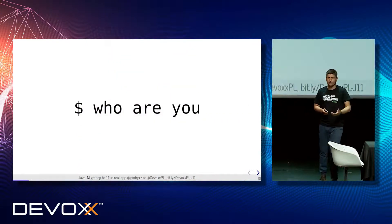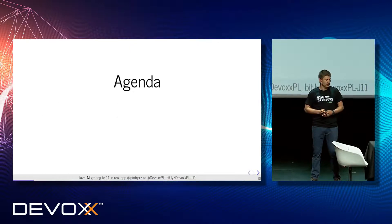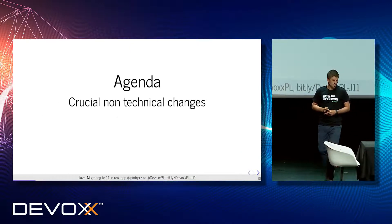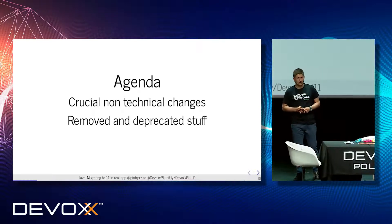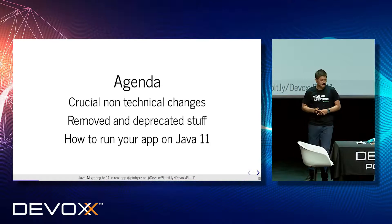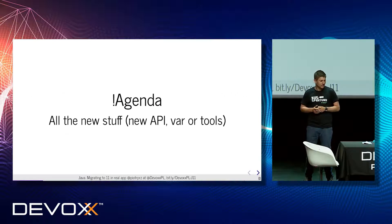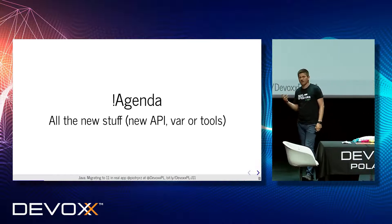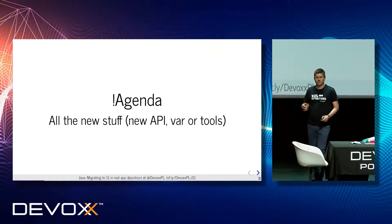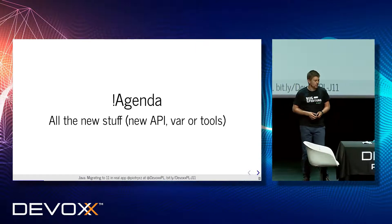I already know who you are, because we did a little voting just before. So agenda for today: we'll cover crucial non-technical changes, talk about removed and deprecated stuff, and finally how to run your current application on Java 11. What we are not going to cover is all the new fancy stuff like new APIs, var, or tools. So if you came for Java goodies, this is not going to happen during this talk.